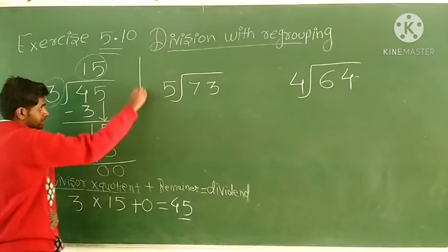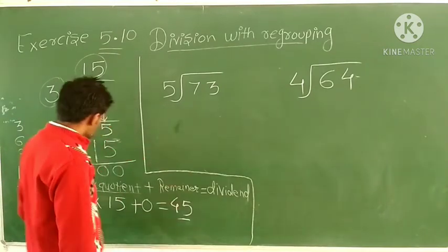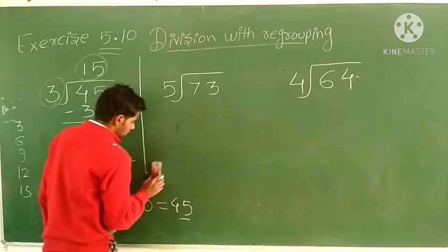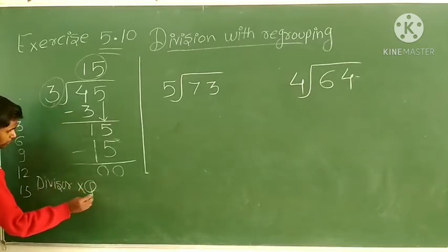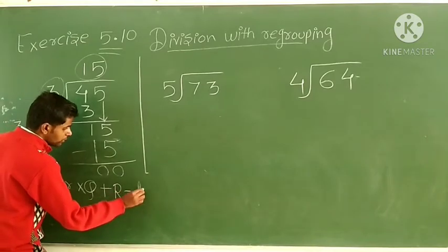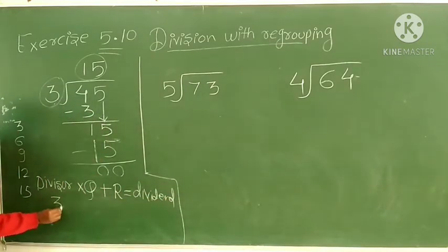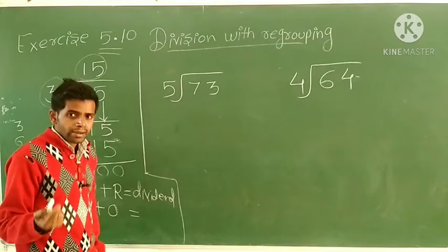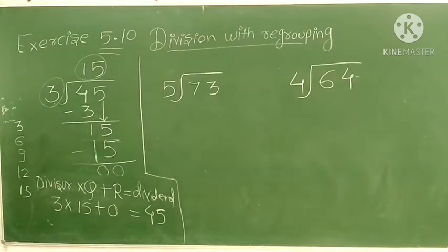Everyone, the first question is complete. For the verification shorthand: divisor × quotient (Q) + remainder (R) = dividend. We multiplied 3 with 15 and added 0, giving 45. Since adding or subtracting 0 does not change the number, it becomes 45, which equals the dividend. Now let us move toward the next question.